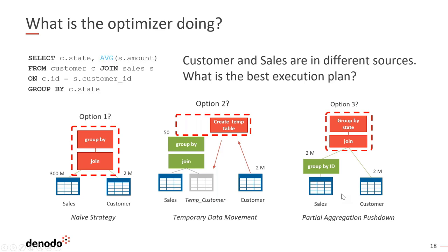With partial aggregation pushdown, because we know that ID is the primary key of the customer table and the column used to join to the sales table, we know we can pre-aggregate the sales table by ID. Even though the customer is asking for data aggregated by state, we pre-aggregate sales by customer ID, which cuts the data from 300 million rows down to 2 million. We return those 2 million pre-aggregated rows from sales, join them to the 2 million rows from the customer table, do a second aggregation by state, and return the final result to the user.